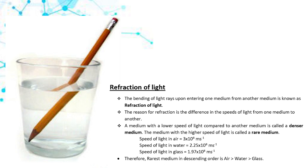Today we are going to talk about refraction of light. If you place a pencil inside a glass of water, you will see the pencil appears bent. The reason for this is the bending of light rays when they enter from one medium to another medium with different optical properties. Light rays coming to the eye from the part of the pencil inside the water travel through the water before reaching the eye, so when light rays enter air from water, the direction of light rays changes.